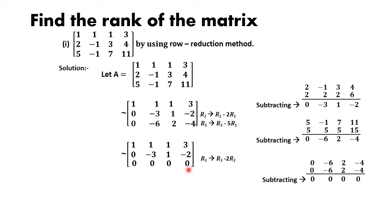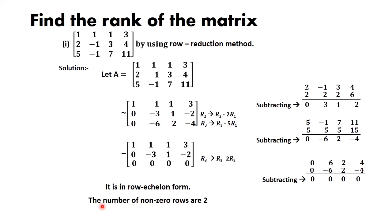Now the first row's first element is non-zero, the triangular pattern of zeros is satisfied, and the number of zeros in each successive row is greater than in the previous row. So it is in row echelon form. The rank of the matrix equals the number of non-zero rows in the row echelon form. Here the number of non-zero rows is 2, so rank of A = 2.